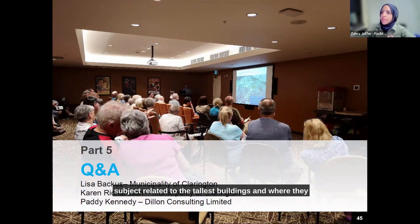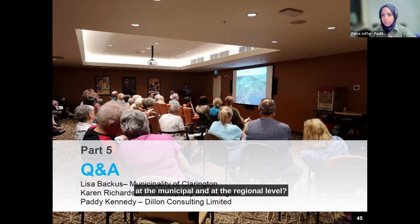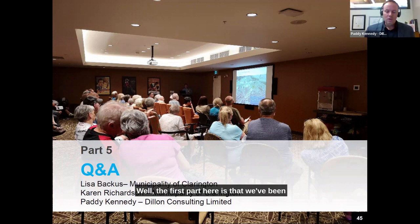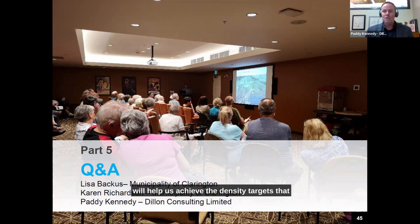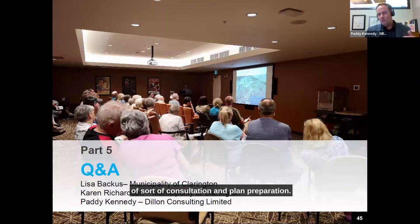A great segue into questions about the tallest buildings — particularly around the GO station. How did we arrive at the maximum height, and do we feel confident it will help achieve the intensification targets at the municipal and regional level? We have been using a model to test out different heights and densities to understand how it all adds up. The plans we have now should help achieve the density targets set out by the province, and we're entering the final phase of consultation where we remain open to feedback.